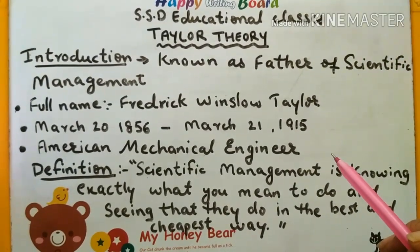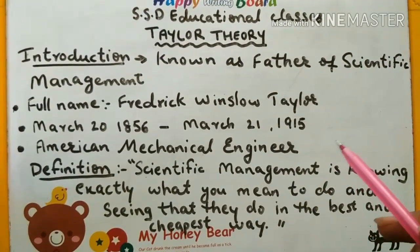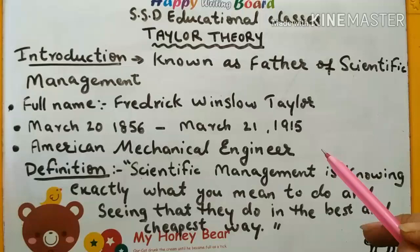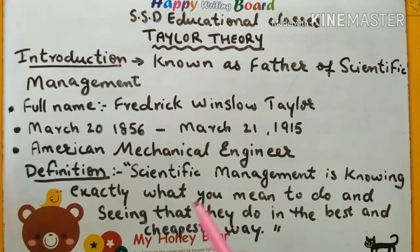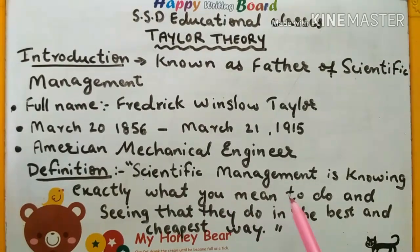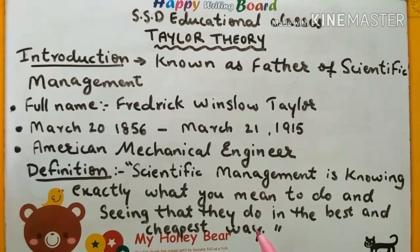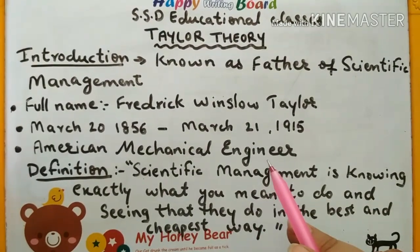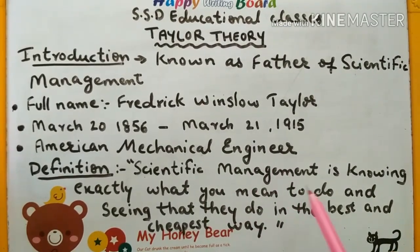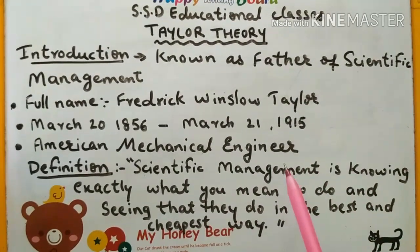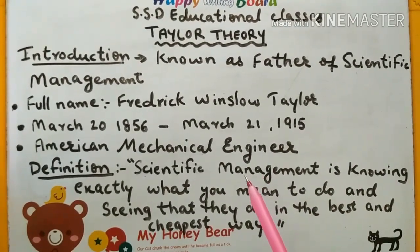He made practical experiments and after those practical experiments, he gave us a definition. Scientific management is knowing exactly what you want to do and seeing that it is done in the best and cheapest way. When he was an American mechanical engineer, he made a theory of management which is called scientific management.